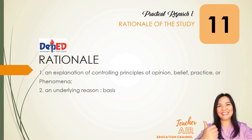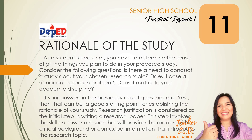Now that you already have a glimpse of what rationale is, let us dig deeper on how it is used. Let's discuss further the rationale of the study. Consider the following questions: Is there a need to conduct a study about your chosen research topic? Does it pose a significant research problem? Does it matter to your academic discipline? If your answers to these questions are yes, then that can be a good starting point for establishing the rationale of your study. Research justification is considered the initial step in writing a research paper. This step involves the skill of how the researcher will provide readers with critical background or contextual information and introduce the research topic. Moreover, it needs to indicate the reasons why the proposed research actually matters, and the researcher must be able to get the audience's attention right from the introduction.